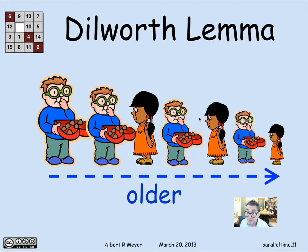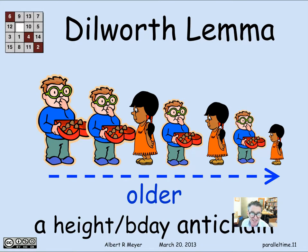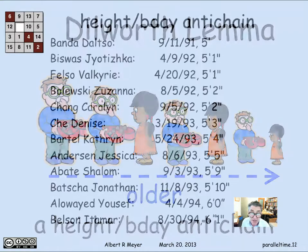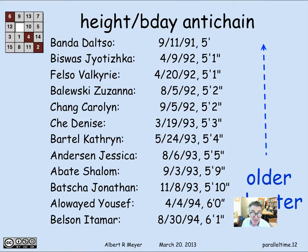So in an anti-chain, if you sort students by height, they must be getting older as they get shorter. In a chain, they'd be getting younger as they got shorter. In fact, in this class we actually had an anti-chain. Here's a quick list of a dozen students: someone who is 6'1" born in August 1994, then someone born in April 1994 at 6'0", all the way down to someone born in 1991 who is five feet tall. So we lucked out — we could have only had a chain, but we actually had the anti-chain in this case.